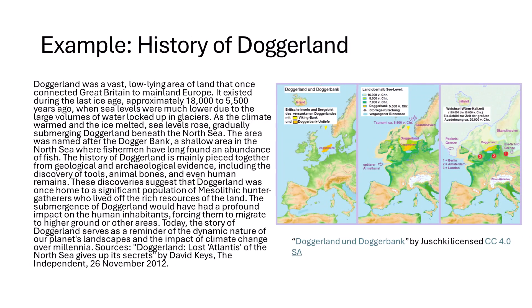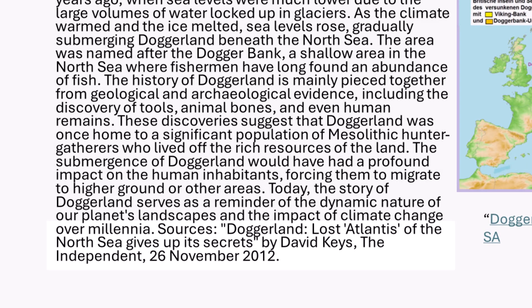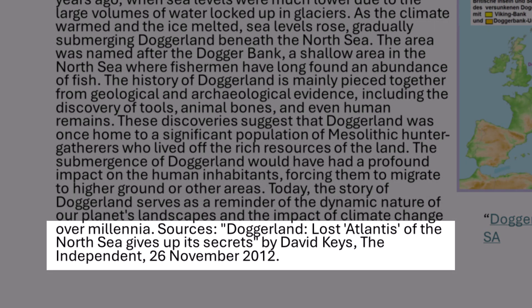Take a look at this excerpt generated by ChatGPT about the history of Doggerland, an area of land that used to connect the British Isles to mainland Europe before the glacier melt. I asked ChatGPT to cite the source and was provided with this citation: 'Doggerland: Lost Atlantis of the North Sea Gives Up Its Secrets' by David Keyes, The Independent, 26th November 2012.